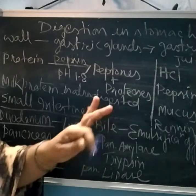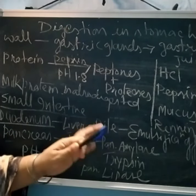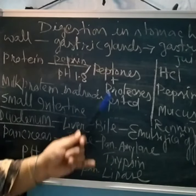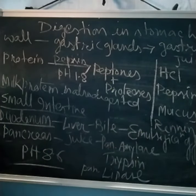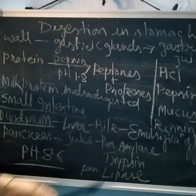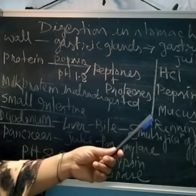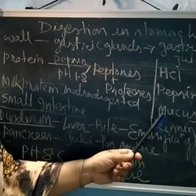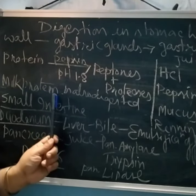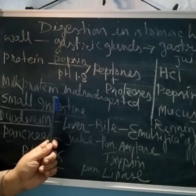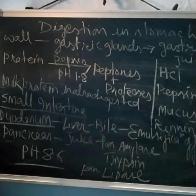Whatever food enters the stomach is churned inside, and this churning helps in mixing up the HCl, pepsin, etc. Now, rennin is an enzyme that particularly digests milk protein. Milk protein is called casein, and casein is digested by rennin.